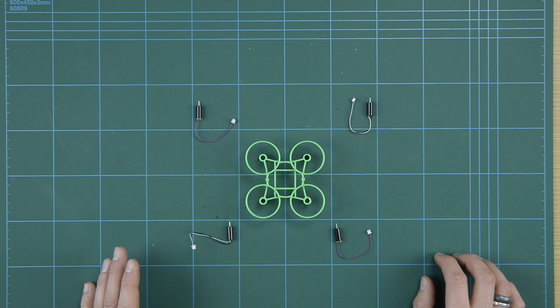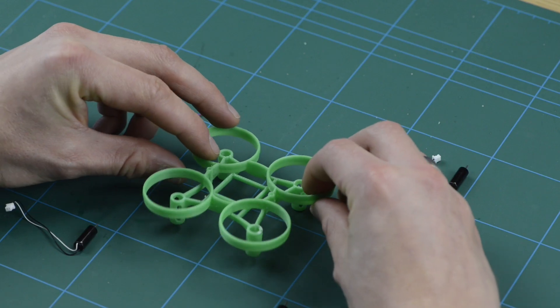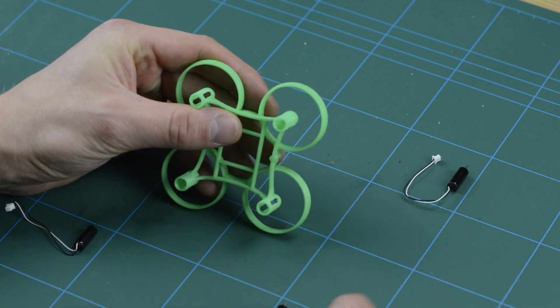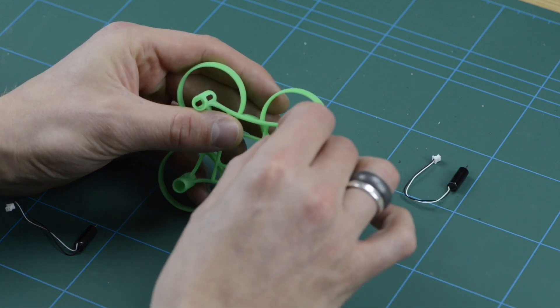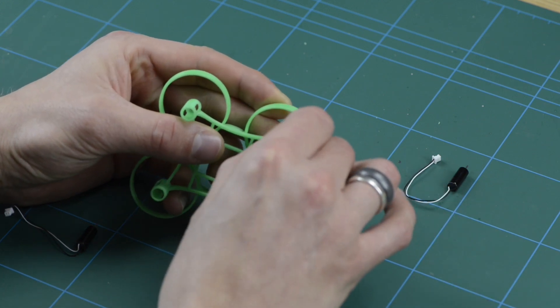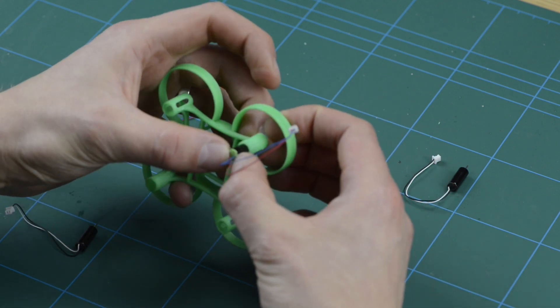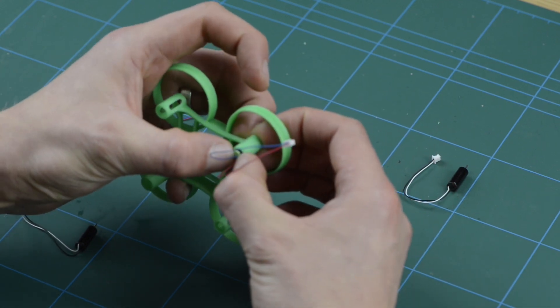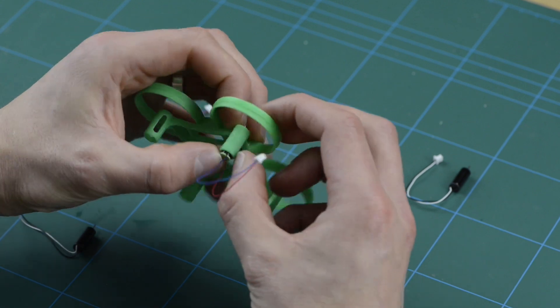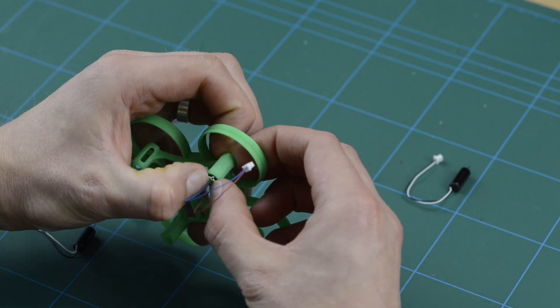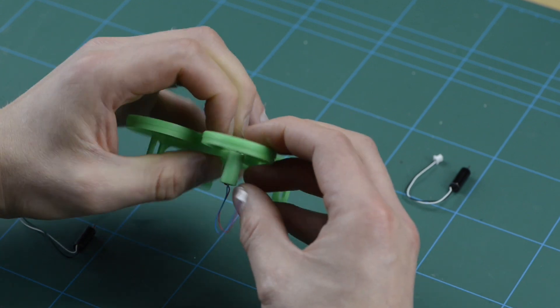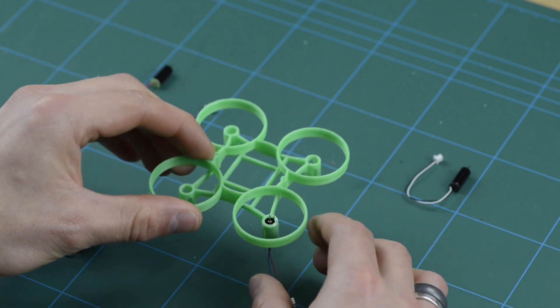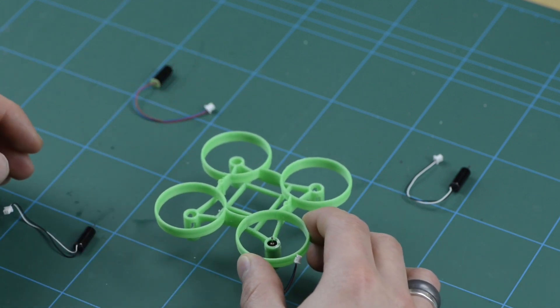And then the motors themselves just push fit into the frame from the bottom. So you pick your frame up, take a motor and push it in from the bottom of the frame and just make sure that it goes all the way in so that it comes up to the flange at the top. And then you need to repeat that for all four motors.